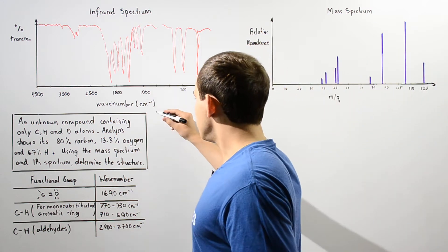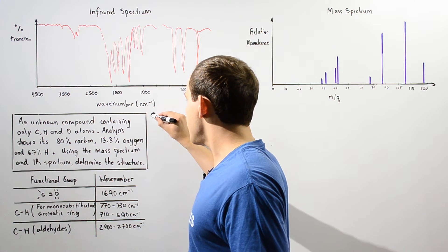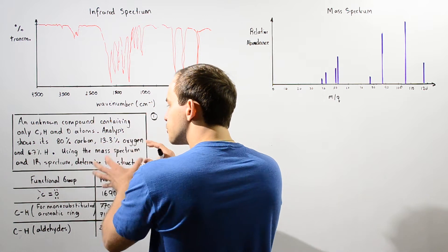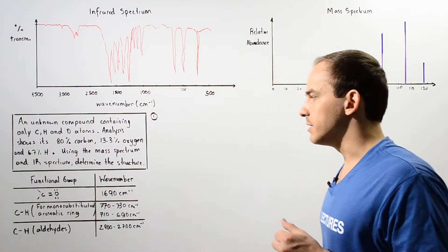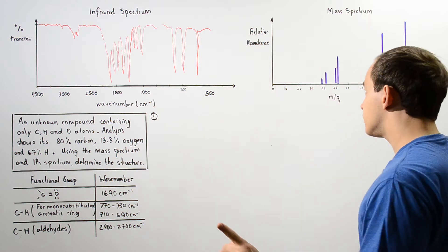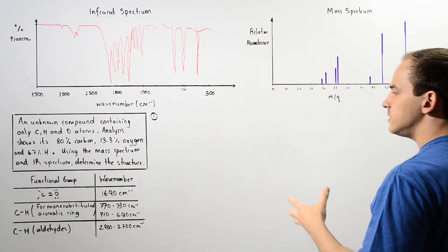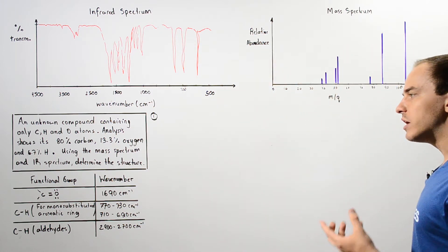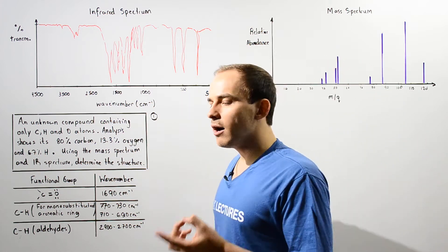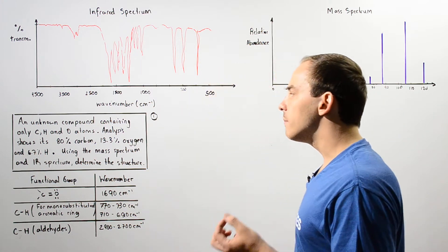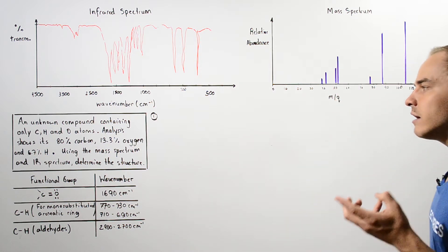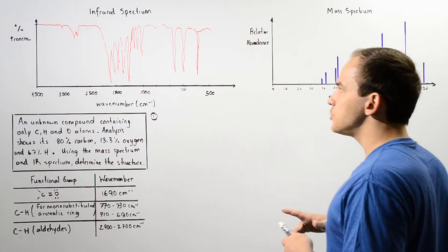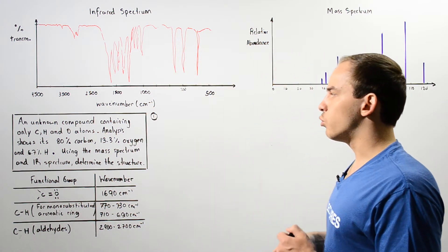We're going to break this problem down into three steps. In step one, we use these percentages to determine the empirical formula. Next, we use the empirical formula and the mass spectrum to determine the molecular formula. In step two, we use the equation for degree of unsaturation to determine the number of double bonds and/or rings in our compound. Finally, we use that information and the infrared spectrum to determine the structure.